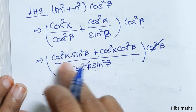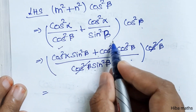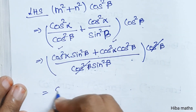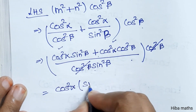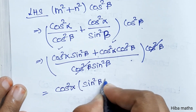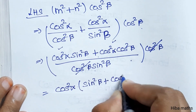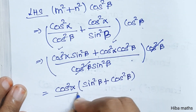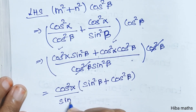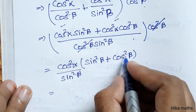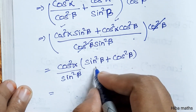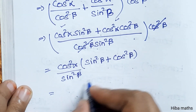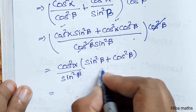Now the two terms in the numerator both have cos²α, so we can factor it out. We get cos²α · (sin²β + cos²β) divided by sin²β. Since cos²β + sin²β equals 1, the expression simplifies.